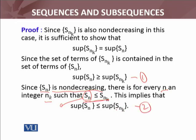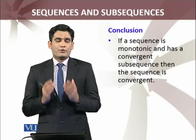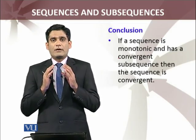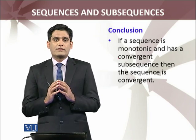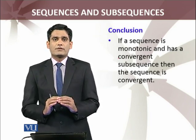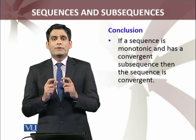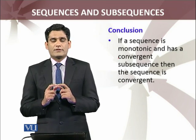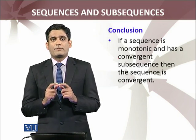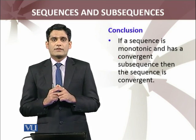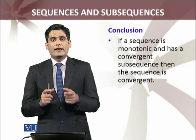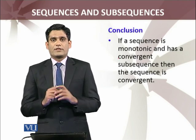Combining both inequalities, we conclude that the supremum of the subsequence equals the supremum of the sequence. Hence it is proved that if you have a monotonic sequence which has a convergent subsequence, the original sequence will also converge. I hope you understand this proof and will be able to apply this result to sequences that are monotonic and have convergent subsequences.